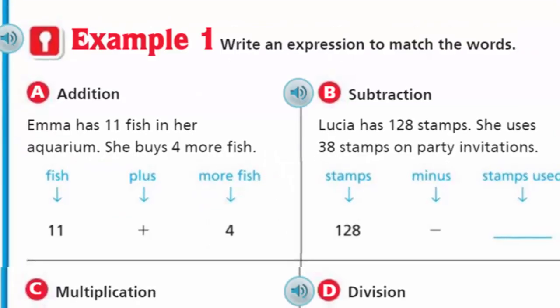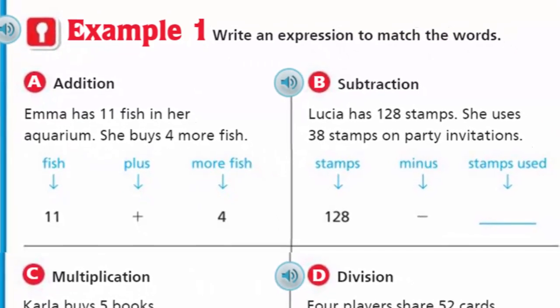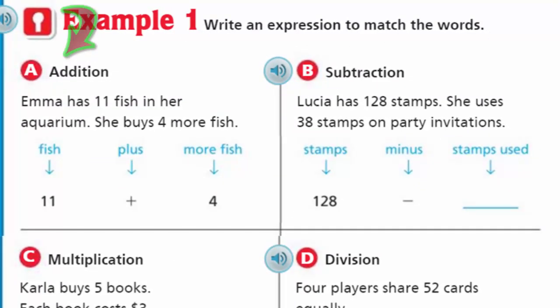Let's go down to Example 1. Example 1 says write an expression to match the words. We look at the first one, A. It says Emma has 11 fish in her aquarium. She buys 4 more fish. So we can represent that scenario with 11 + 4, because there's 11 fish and she's adding 4 more. That is an expression.